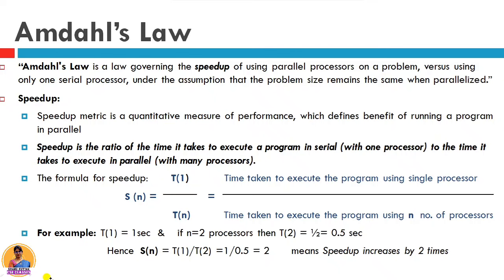This concept is Amdahl's Law — it is the same thing with systems. If we are doing a computation in a serial processor and we do that same thing in parallel processes, we will obviously get some speed up and some improvement in performance. Amdahl's Law governs the speed up of using parallel processes on a problem versus using only one serial processor, under the assumption that the problem size remains the same when parallelized.